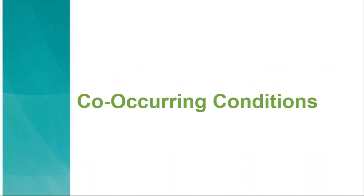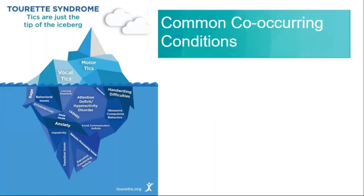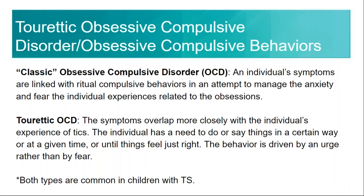Let's talk about some of these co-occurring conditions. I love the iceberg diagram — tics are really just the tip of the iceberg. Above the water, that's what you can see — motor tics and vocal tics. But there's so much that could be going on underneath the surface that plays into behavior and academic success for kids with Tourette syndrome: dysgraphia, handwriting difficulties, anxiety, impulsivity, sensory processing issues, behavior, rage, and disinhibition, just to name a few.